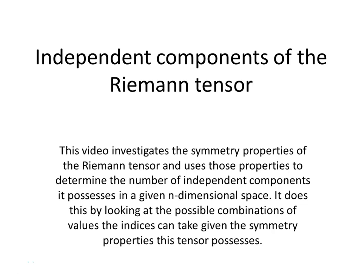This video looks at the symmetry properties of the Riemann tensor and uses those properties to determine the number of independent components it possesses in a given n-dimensional space. It does this by looking at the possible combinations of values the indices can take given the symmetry properties this tensor possesses.